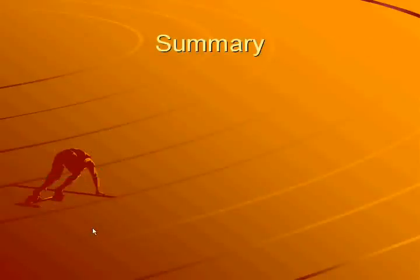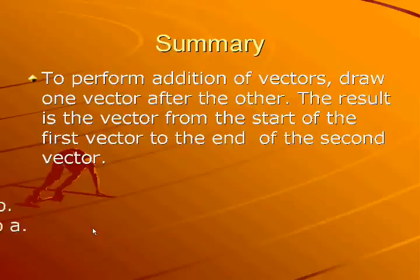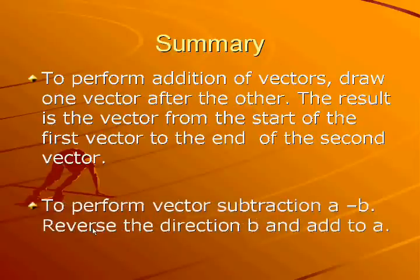A summary of this lesson. To perform addition of vectors, draw one vector after the other. The result is the vector from the start of the first vector to the end of the second vector. When performing vector subtraction A minus B, reverse the direction of vector B and add this reversed vector to A.